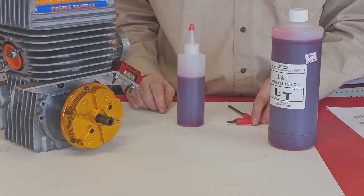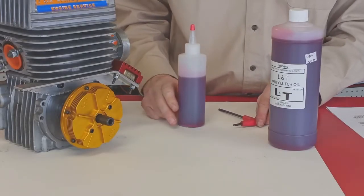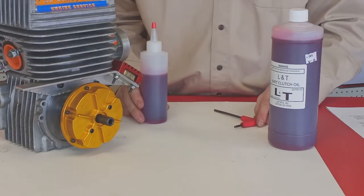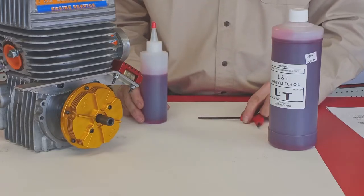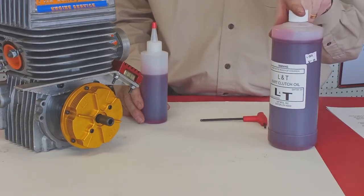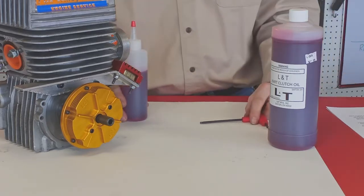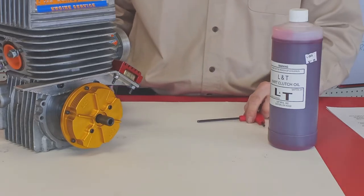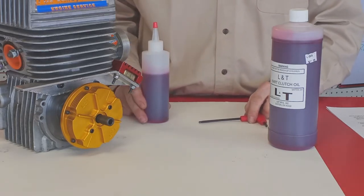The last step on the L&T is to add oil. The oil in this clutch serves both as a coolant and as heat conductor. Always use genuine L&T clutch oil for these clutches. You should check the oil level frequently and drain and replace it if it turns black or smells bad.